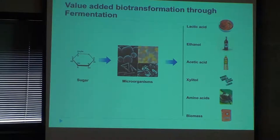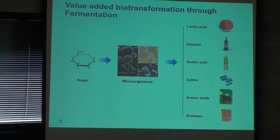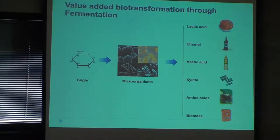We can also produce amino acids. Probably you've heard about monosodium glutamate, which is an amino acid used as a flavor enhancer — we produce it using microorganisms. And also we produce biomass, like yeast cells. If you bake at home and know how to make bread, you add water to flour, add a little bit of sugar, and then add yeast. We produce this yeast by fermentation. So this is a very popular process in food science.